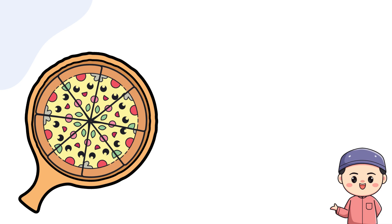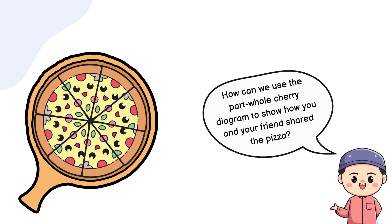Now, let's switch gears to something delicious. Pizza. Imagine a pizza cut into 8 slices. You and your friend decide to share it. You eat 5 slices and your friend eats 3 slices. Yum, right? How can we use the part-part-whole cherry diagram to show how you and your friend shared the pizza? Take a moment to figure it out.